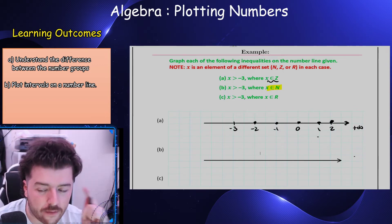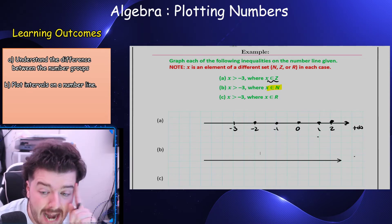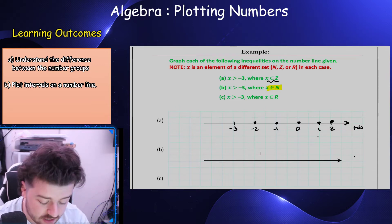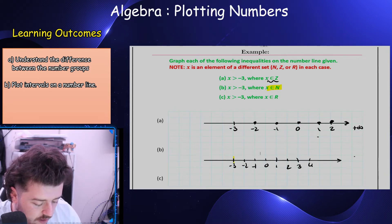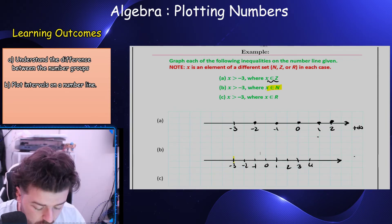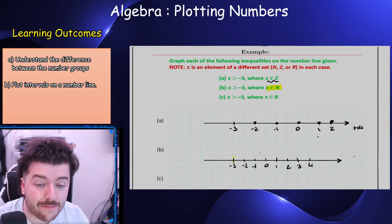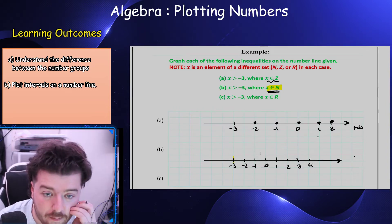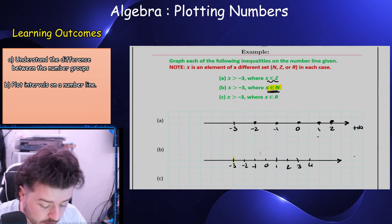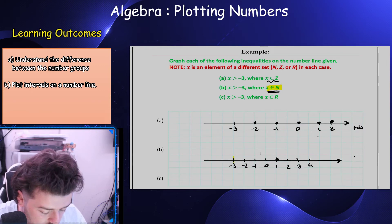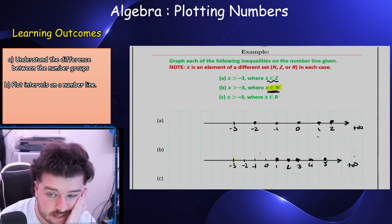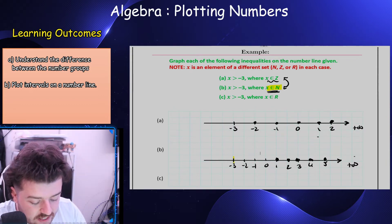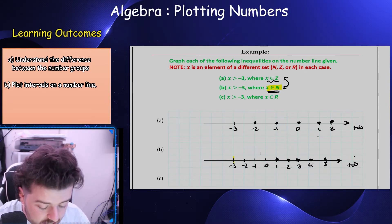Now the same interval — x is greater than minus three — but x is an element of natural numbers. Remember, natural numbers are whole positive numbers greater than zero. So plotting from minus three to four: I'm not including minus two, minus one, or zero because those aren't natural numbers. I only include one, two, three, four, and so on to plus infinity.